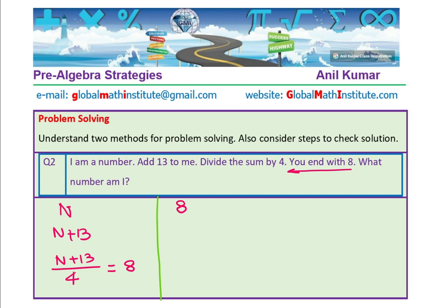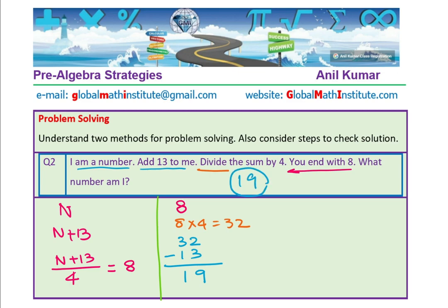After dividing we got 8, so now we multiply: 8 times 4 is 32. Before that, it said add 13, so the reverse is subtract 13. So I do 32 minus 13, which gives 19. We landed with the number 19. So that is pre-algebra — we are using strategies to solve the question without formally solving the equation, though we do derive one.